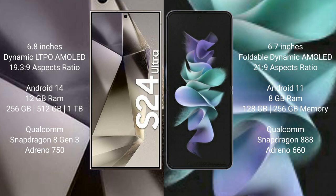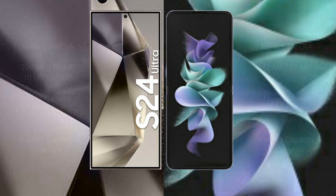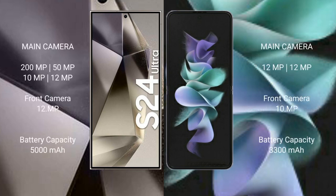Samsung Galaxy S24 Ultra features a quad camera setup: 200MP plus 50MP plus 10MP plus 12MP, and a 12MP front camera. Samsung Galaxy Z Flip 3 features a dual camera setup: 12MP plus 12MP, and a 10MP front camera.